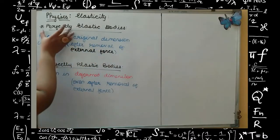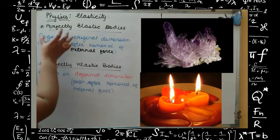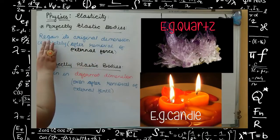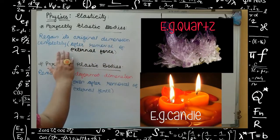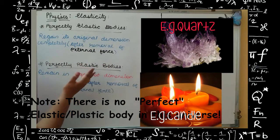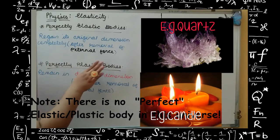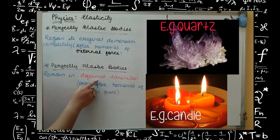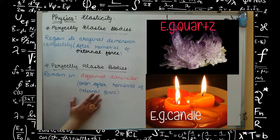There are two further types: perfectly elastic bodies and perfectly plastic bodies. Perfectly elastic bodies are those which can regain their original dimension after removal of external force — they come back to their original dimension after we remove the force. Perfectly plastic bodies remain in deformed dimension even after the removal of external force.